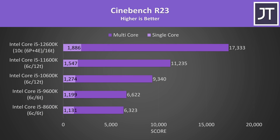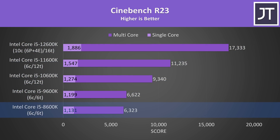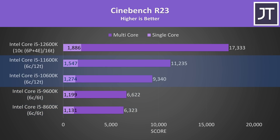Starting with Cinebench R23, it's an easy way to get a general idea of both single threaded and multi threaded performance. I've got the newest 12th gen at the top, followed by 11th, 10th, 9th and 8th gen underneath. Performance gets better with each generation, however single core scores hardly change between 8th and 10th gen. 11th gen offers a larger 21% boost there, and then 12th gen was 22% ahead of 11th gen.